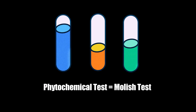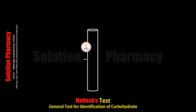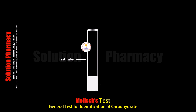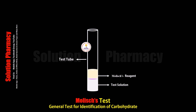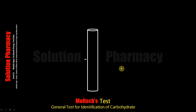Hello friends, welcome to the channel Solution. Today in this video we will tell you about the Molisch test — how the Molisch test is performed and also about its principle. Molisch test is the general identification test for carbohydrates, meaning if we want to detect the presence of carbohydrate in any sample, we can do it by performing the Molisch test. First, let's know about the procedure.